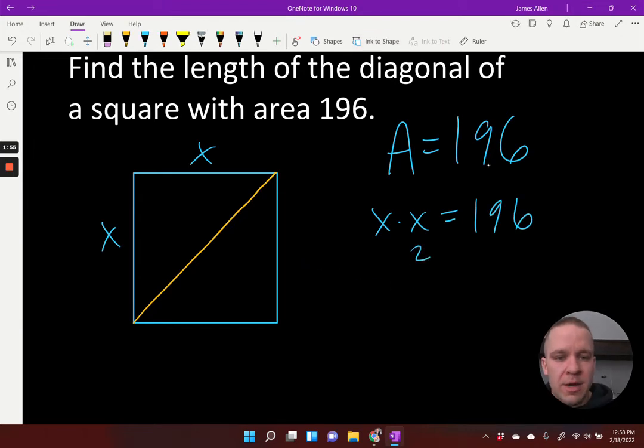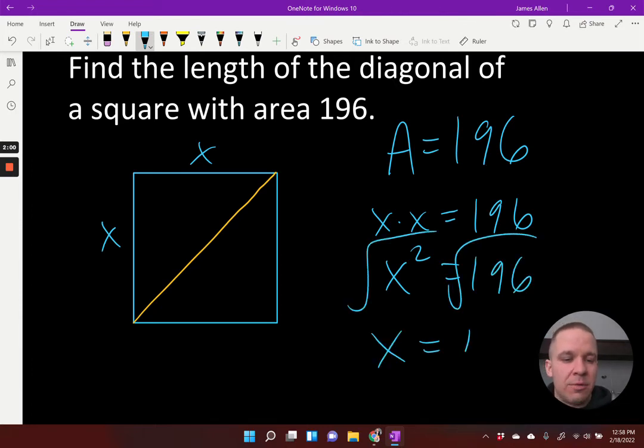Whoa. Turn that off. X squared is equal to 196. I can just square root. And I'm going to get X equals 14 for each one of my sides here. Okay.